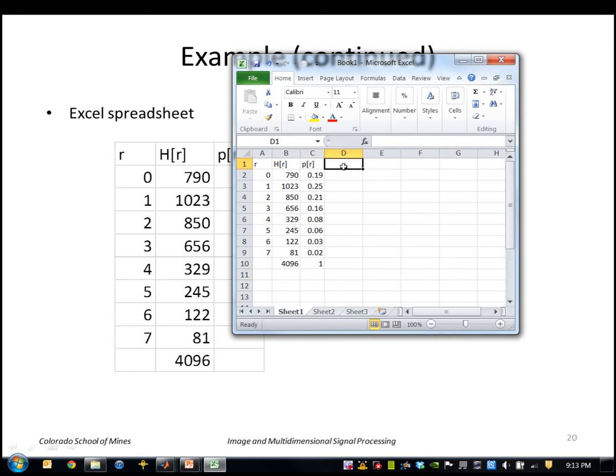I can also compute the sum of these values just to make sure that sums to one as it should. As far as the CDF, the CDF remember is the cumulative sum, so I start with that and then each cell is the current value of PDF plus the previous value of the CDF.